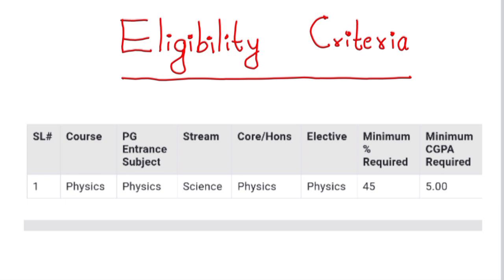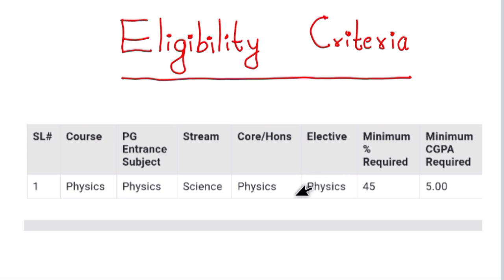Eligibility criteria: the course name is Physics. The entrance subject is Physics, Science, and Core — this is an honours paper. Physics elective subjects are required. The percentage of marks required is 45%, which means a CGPA of 5.00.